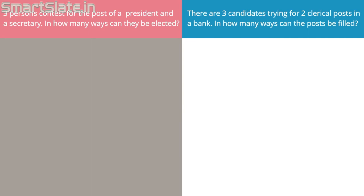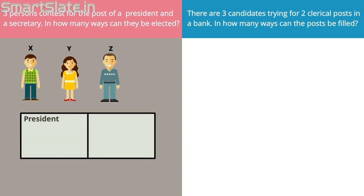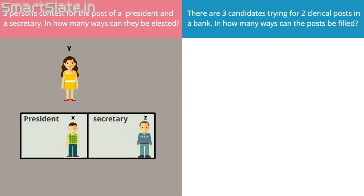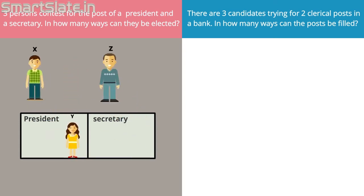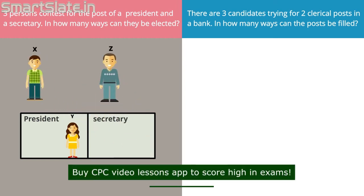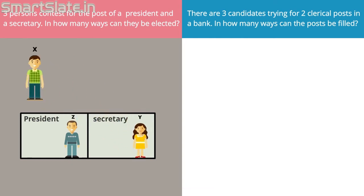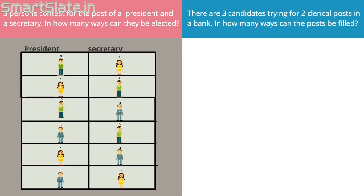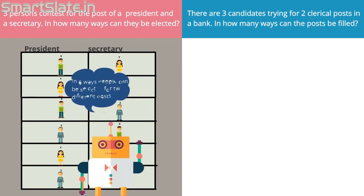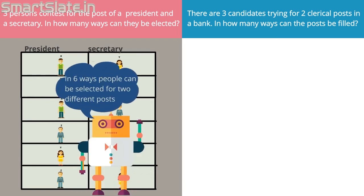Let's solve the first problem. We call these three people X, Y, and Z. There are two posts: president and secretary. If X becomes president, then either Y or Z can be secretary. If Y becomes president, then either X or Z can be secretary. Similarly, if Z becomes president, then either X or Y can become secretary. Just have a quick look at all the possibilities — there are a total of six different ways in which these three people can be elected to the posts.